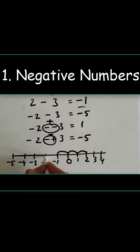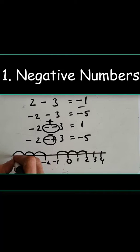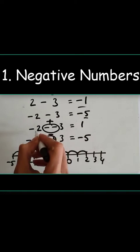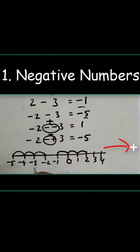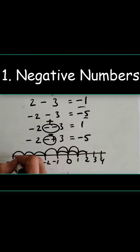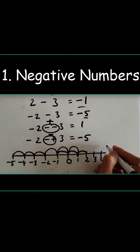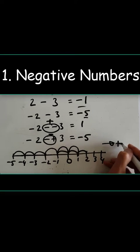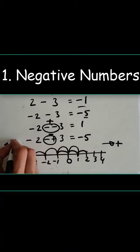For minus 2 minus 3: start at minus 2, go three steps to the left — one, two, three — giving us minus five. For minus 2 plus 3: start at minus 2, add three going right — one, two, three — giving us positive one. Always draw the number line if you're unsure. Remember: going right is positive, going left is negative.